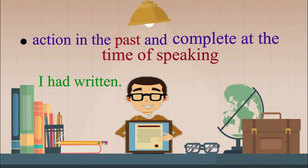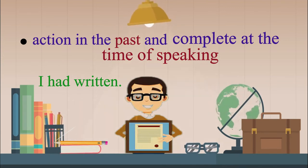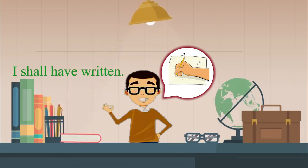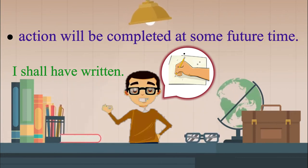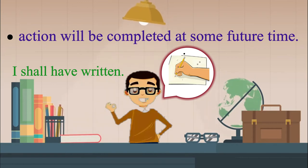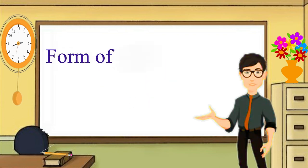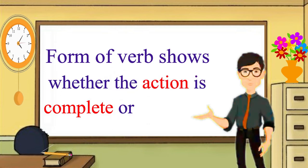The third sentence, I shall have written, shows that the action of writing shall be completed at some future time. What do we notice? We notice that the form of the verb also expresses or shows the state of an action. That is, whether the action referred to is complete or going on at the time of speaking.